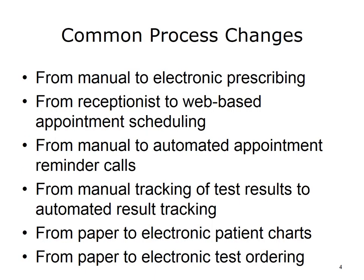To ground ourselves in concrete ideas of what to expect in process change implementation, we'll start with examples of common process changes. Some examples are: from manual to electronic prescribing, from receptionist to web-based appointment scheduling, from manual to automated appointment reminder calls, from manual tracking of test results to automated result tracking, from paper to electronic patient charts, and from paper to electronic test ordering.